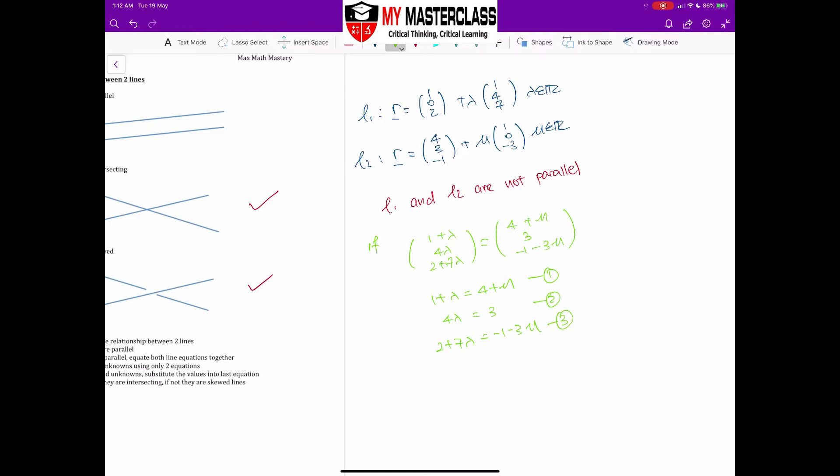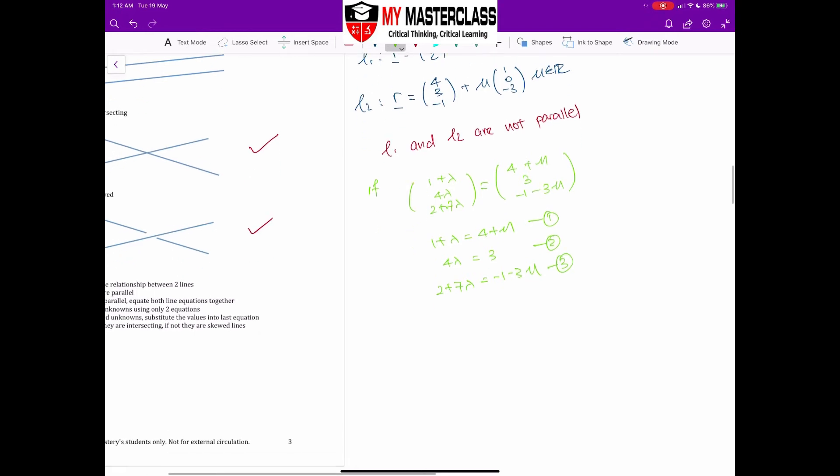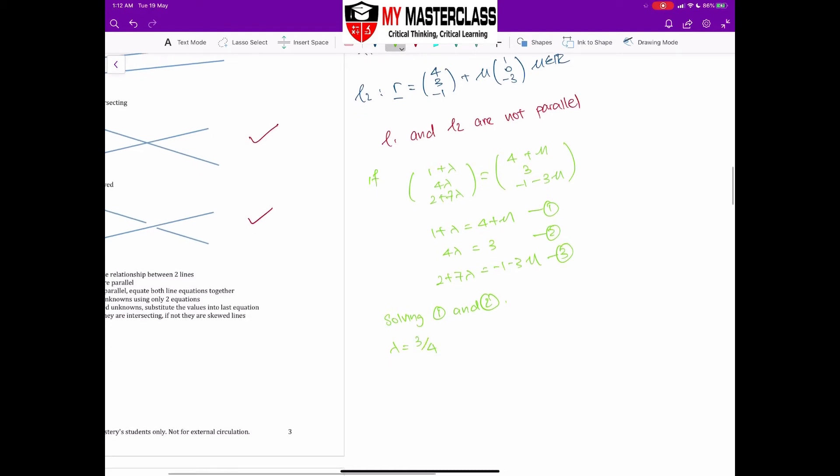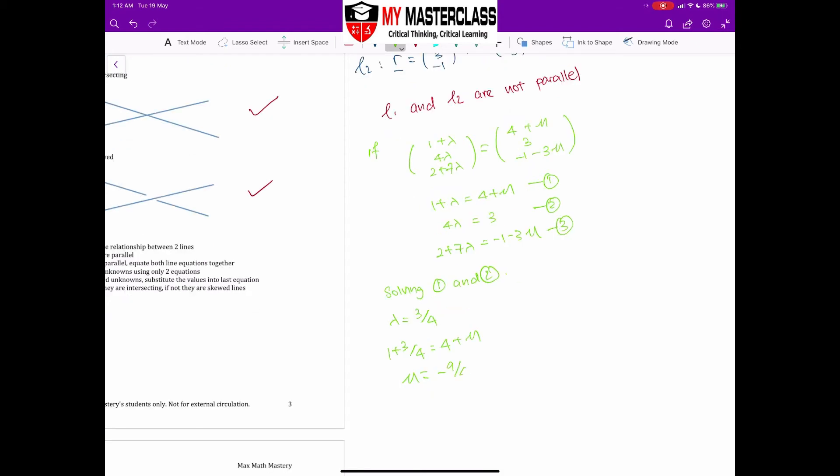I can use equations 1 and 3, 1 and 2, or 2 and 3, doesn't really matter. Since equation 2 is quite straightforward, I'm going to use 2, pairing it together with 1. Solving equations 1 and 2, I will get lambda equal to 3/4. And with lambda equal to 3/4, I'm going to sub into my equation 1. I'll get 1 plus 3/4 equal to 4 plus mu. Essentially my mu will become -9/4.